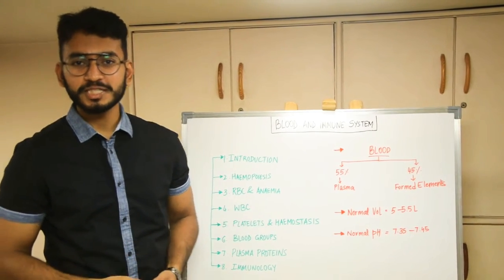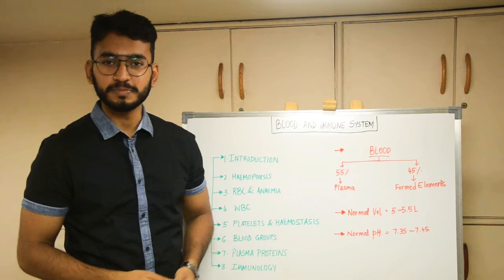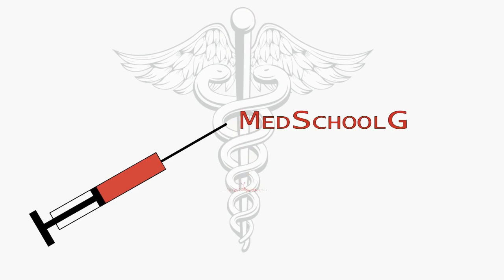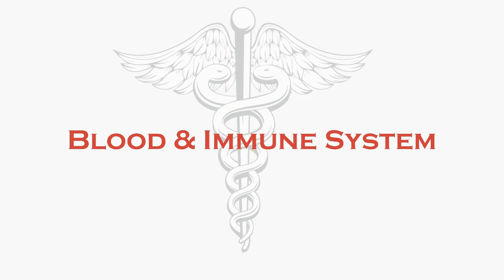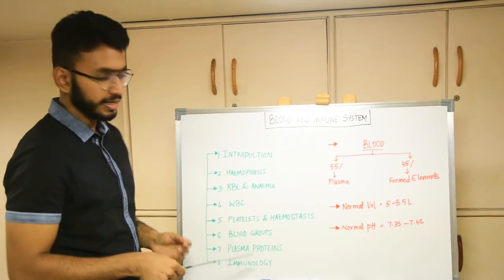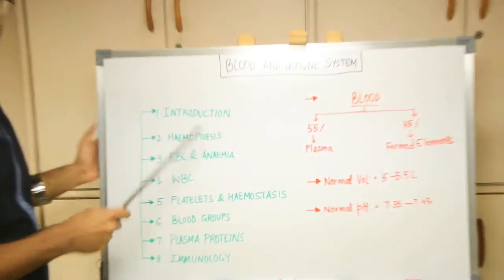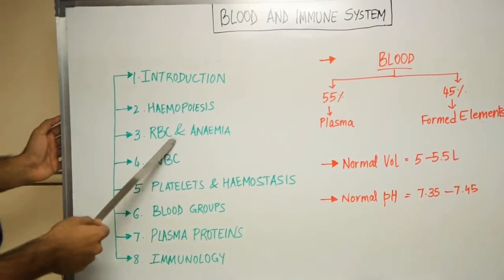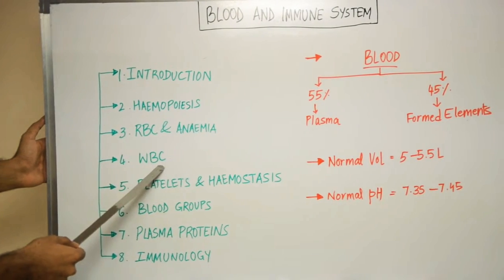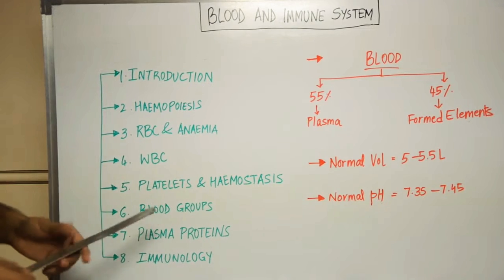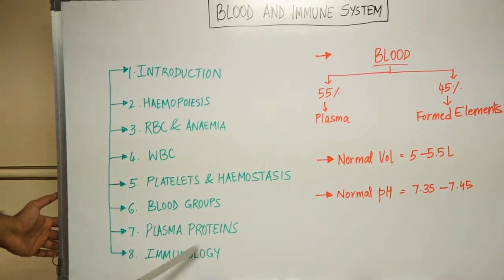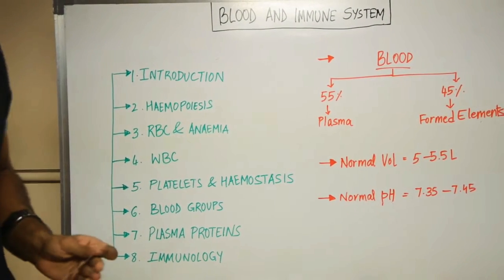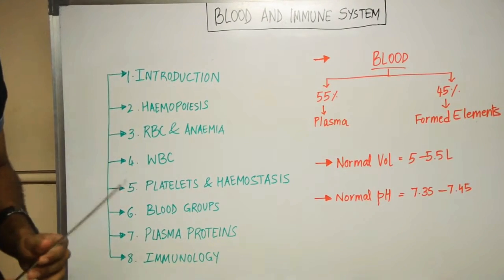Today we'll be starting a new unit: blood and immune system. This unit will cover the following headings: introduction, hemopoiesis (formation of blood cells), RBCs, hemoglobin, anemia, WBCs, platelets and hemostasis, clotting mechanisms, blood groups, plasma proteins, and immunology. Immunology itself will be a series of lectures covered in great detail.